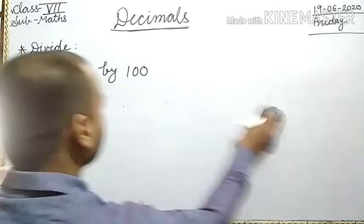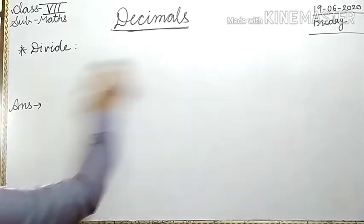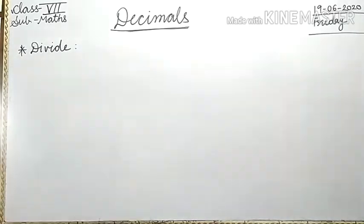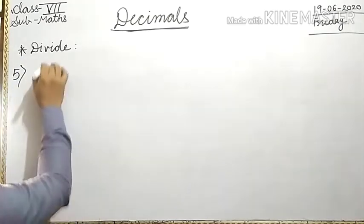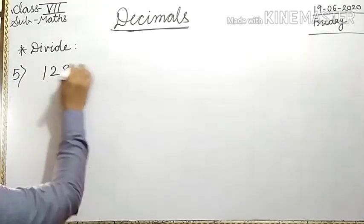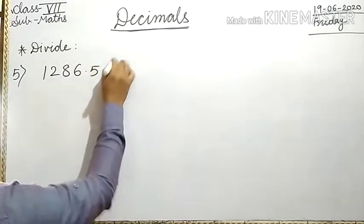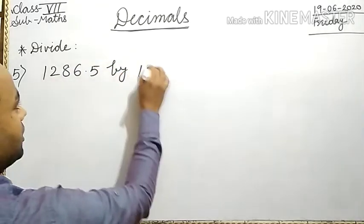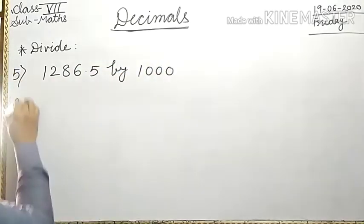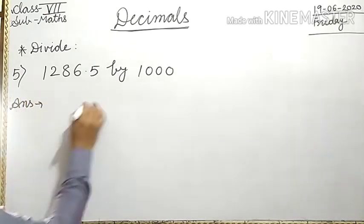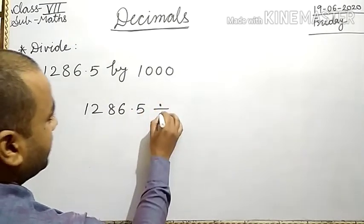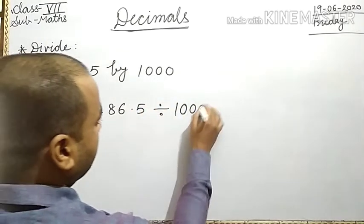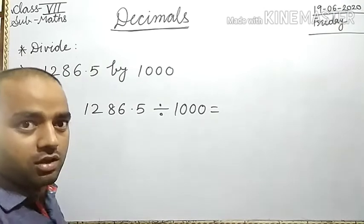Next question, question number 5: 1286.5 by 1000. We write 1286.5 divided by 1000.